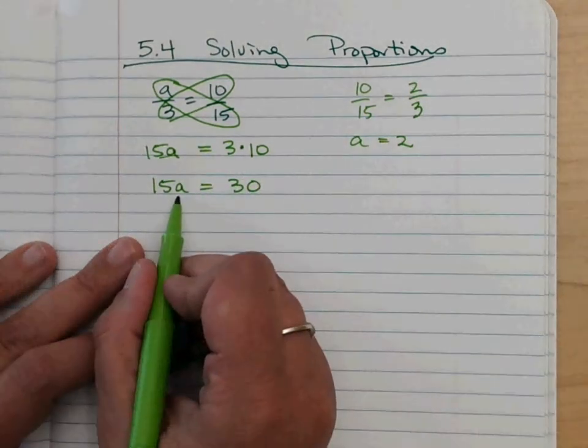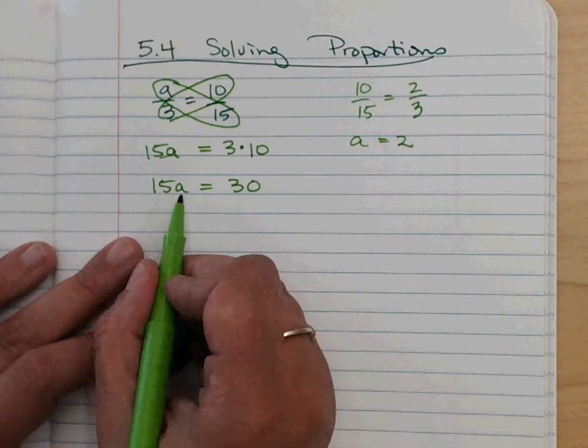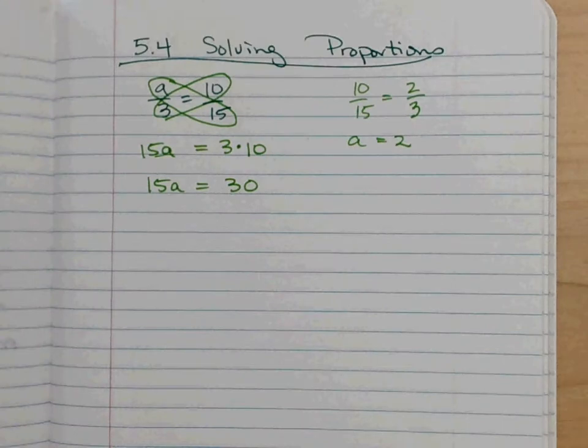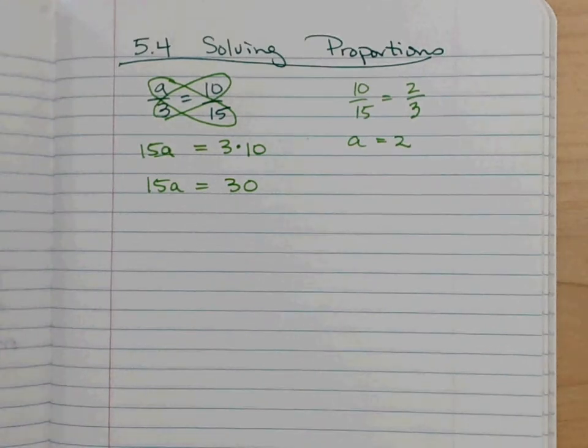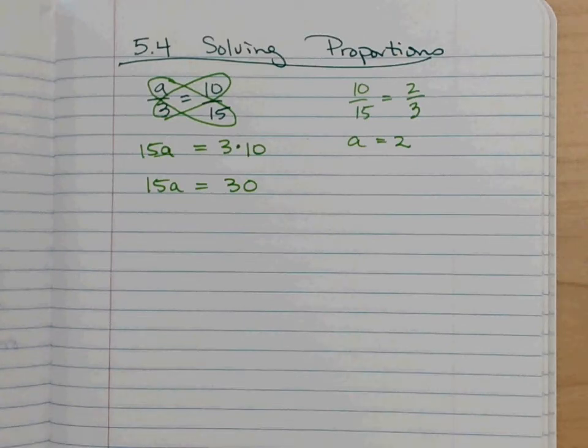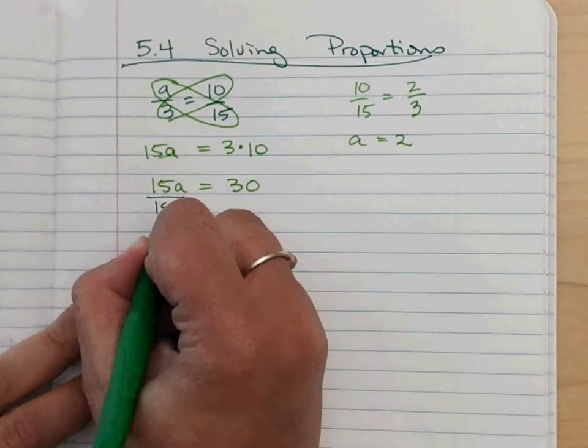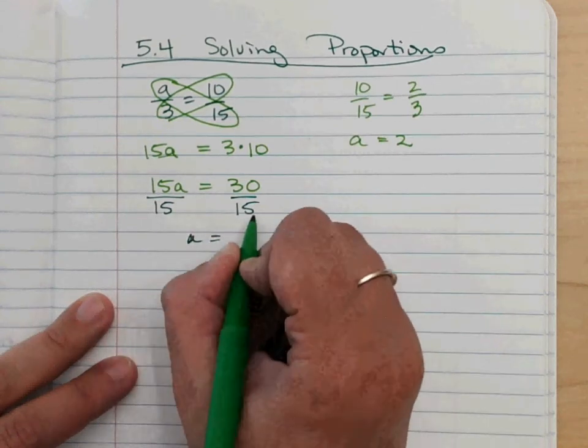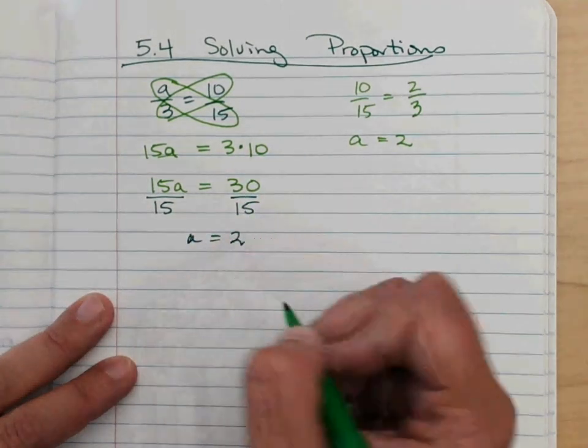Now A is just a placeholder. 15 times some number gives us 30. This is actually algebra. So what number times 15 gives us 30? You might already know that that's 2. And if you didn't, you could divide because that's the opposite of multiplying. A equals 15 goes into 30 two times.